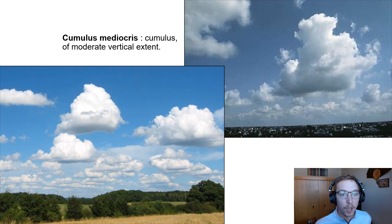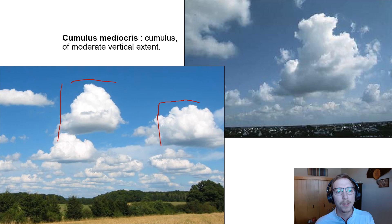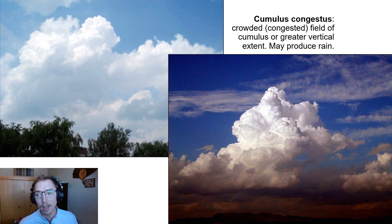Cumulus mediocris are cumulus clouds with moderate vertical extent — pretty uniform in size, almost symmetrical from top to side. There's some vertical development we can infer, and moving from cumulus humilis to cumulus mediocris suggests some type of vertical development is occurring, which indicates some rising instability within the atmosphere.